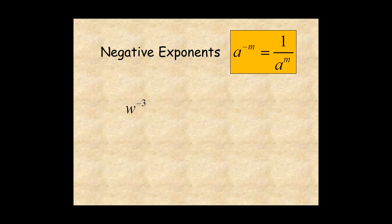For this expression, w to the power of negative 3 is rewritten as 1 over w to the 3. In most cases, when you simplify an expression, you rewrite all negative exponents.